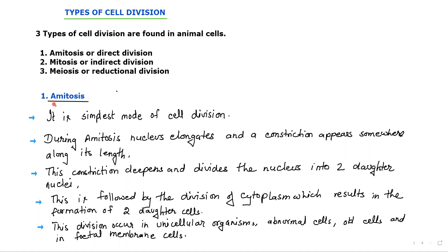Let's see the first one, that is amitosis. Amitosis is the simplest mode of cell division as it is a direct division, so no phases are seen in this cell division. During amitosis, the nucleus elongates and a constriction appears somewhere along its length.